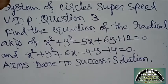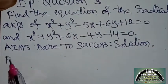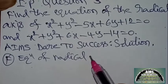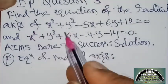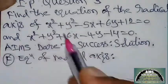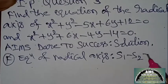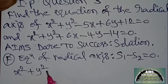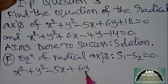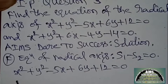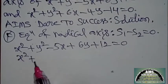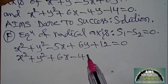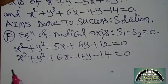AIMS Dare to Success solution. I can write the simple formula: equation of radical axis — while x² and y² coefficients are the same from first and second equation — is S1 − S2 = 0. Writing the circles: x² + y² − 5x + 6y + 12 = 0 and x² + y² + 6x − 4y − 14 = 0.